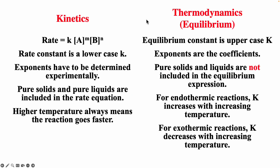Please remember the similarities and differences between kinetics and thermodynamics. Thermodynamics is about what is most stable; the equilibrium constant is capital K, products over reactants, coefficients become exponents, and pure solids and liquids are not included. For kinetics, we talk about the rate equation; the rate constant is lowercase k, exponents must be determined experimentally, and pure solids and liquids are included. For kinetics, higher temperature always means a faster reaction. For equilibrium, higher temperature means larger K for endothermic reactions and smaller K for exothermic reactions.